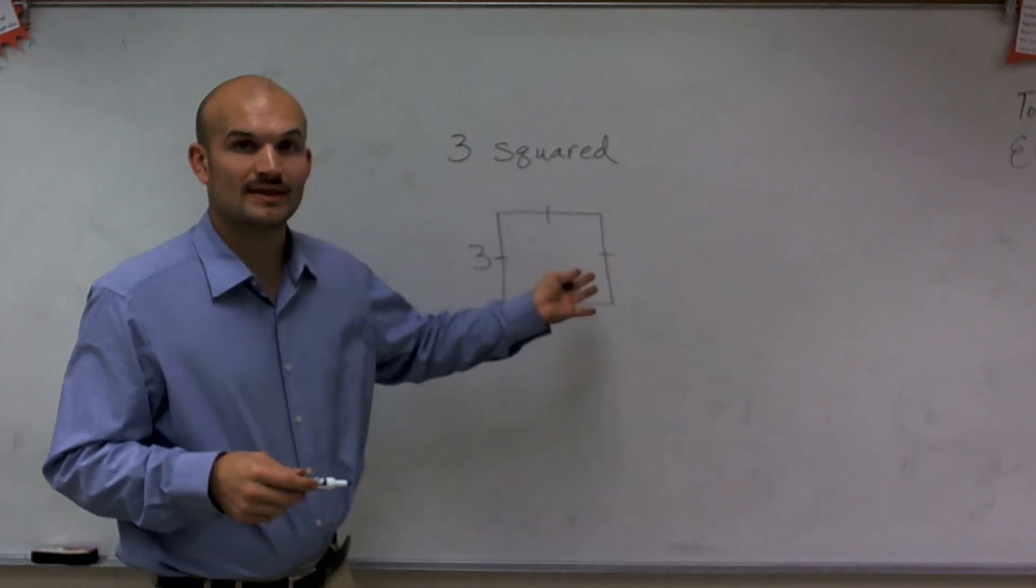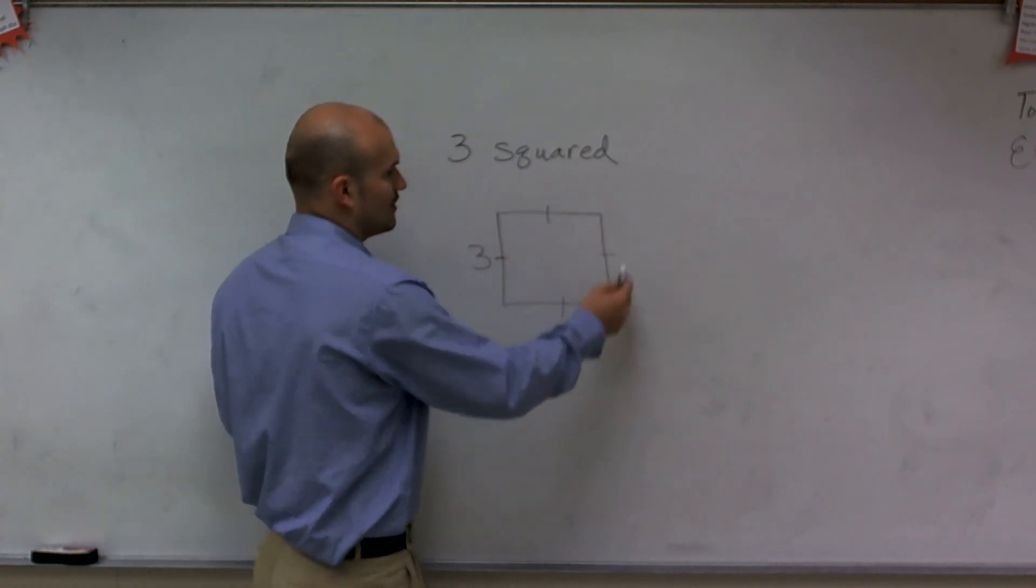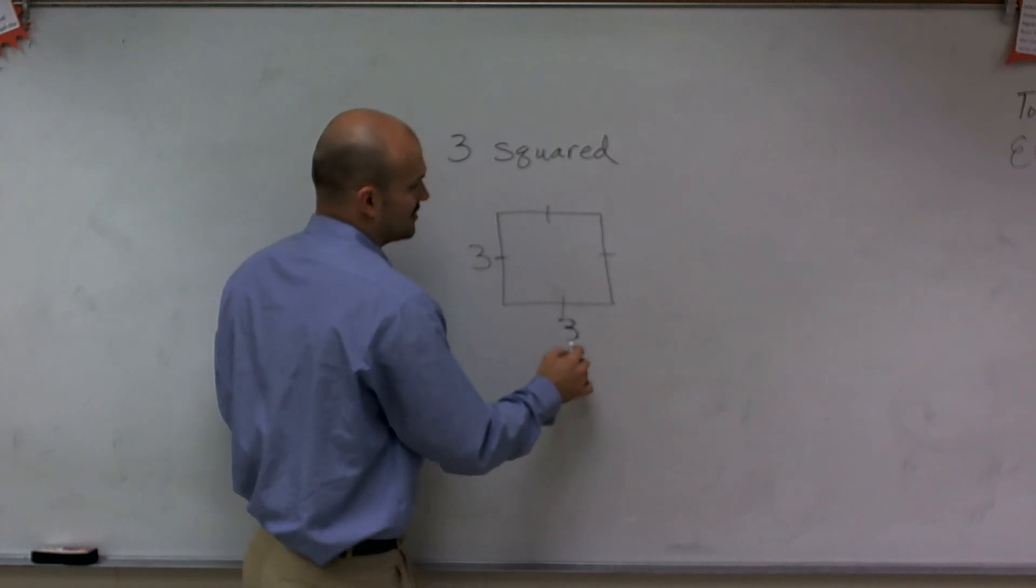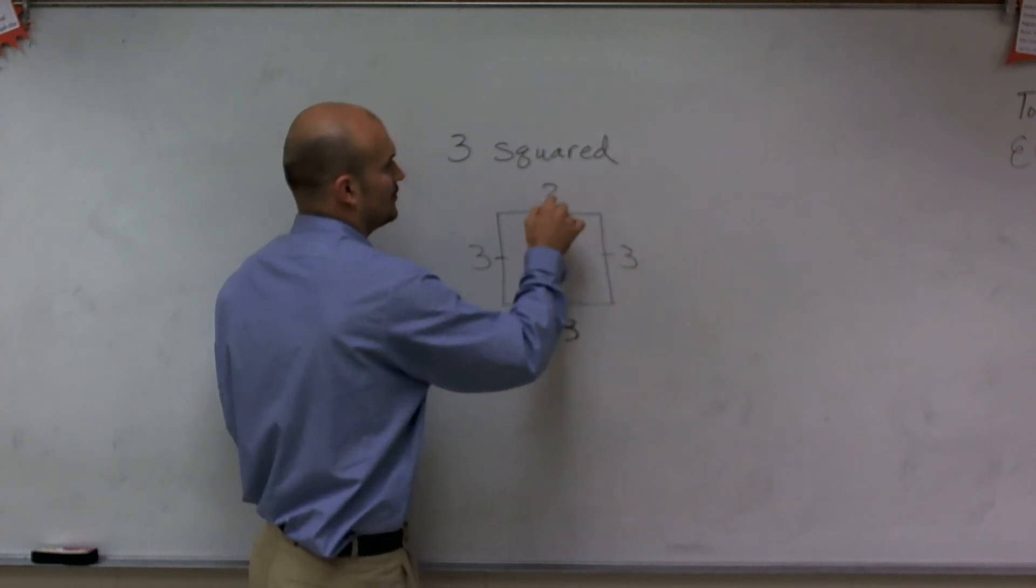when I square that, what that means is I know that all lengths of my square are 3. So I could say my length, my width, my height, they're all equal to 3.